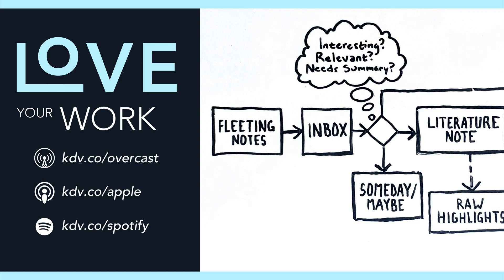I talked about Zettelkasten in my How to Take Smart Notes book summary on episode 249, but here's a quick review. Zettelkasten is German for slip box. In the analog form, a Zettelkasten is a box filled with slips of paper. On each slip is an idea, notes about which other slips that idea is related to, and keywords used for organizing the slips. Much of the original Zettelkasten techniques were developed to adapt the limitations of physical paper to non-hierarchical organization, like today's internet.